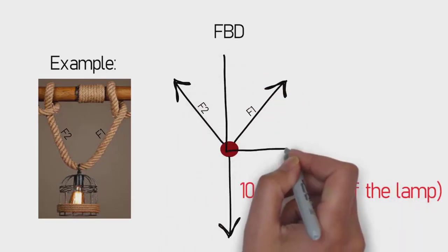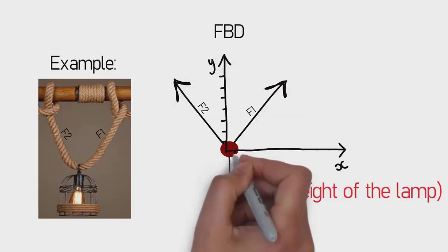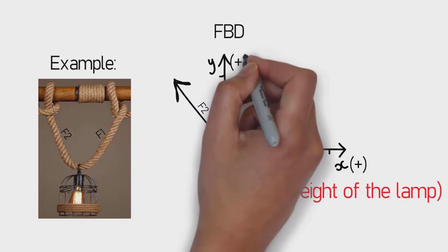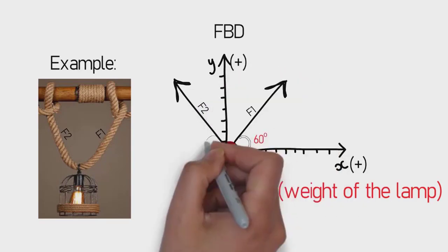Can we obtain forces needed for the cables to carry the lamp? By the way, the angle that ropes make with x-axis is 60 degrees.